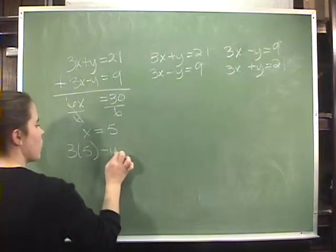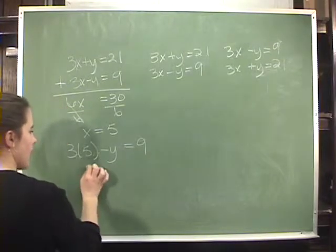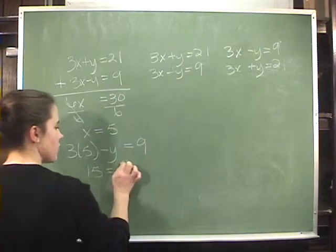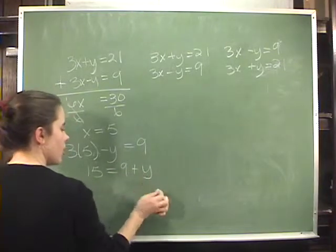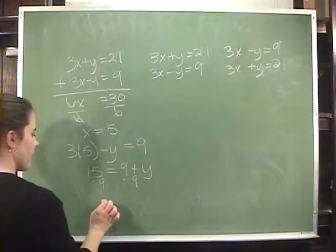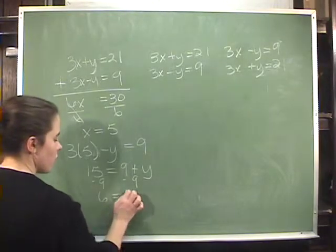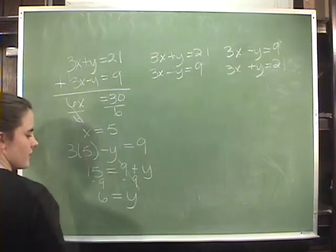3 times 5 minus y equals 9. Adding y to both sides makes 15 equals 9 plus y. Subtracting 9 from both sides, then y is equal to 6.